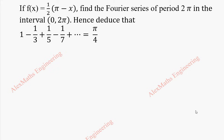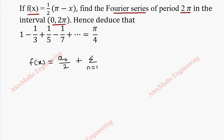Hi students, this is Alex here. In this video, we are going to find the Fourier series of period 2π in the interval (0, 2π) for the given function f(x) = (1/2)(π − x). The Fourier series formula is f(x) = a0/2 + Σ(n=1 to ∞) aₙ cos(nx) + Σ(n=1 to ∞) bₙ sin(nx).